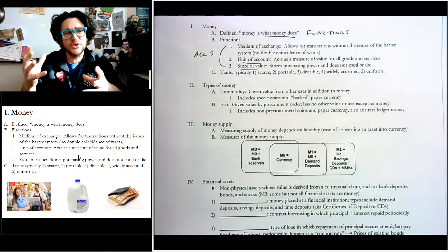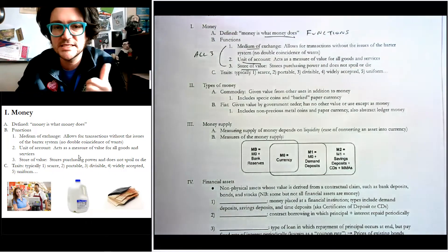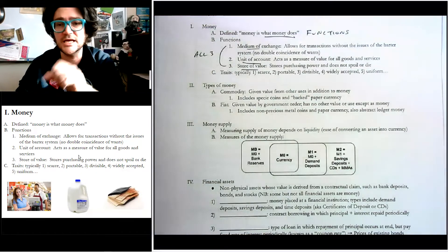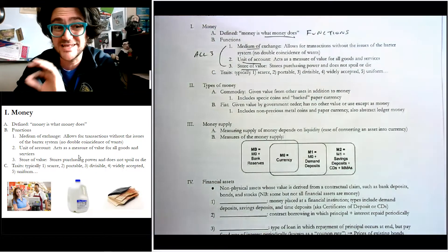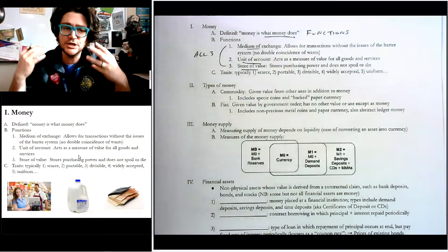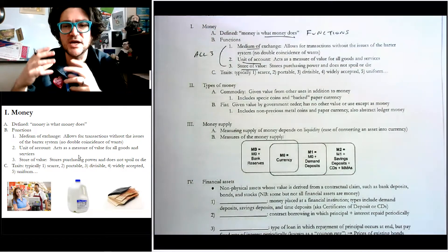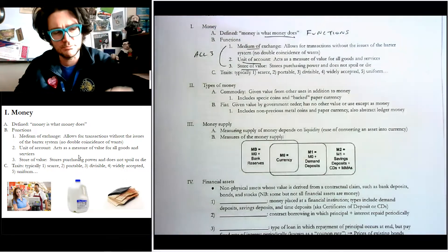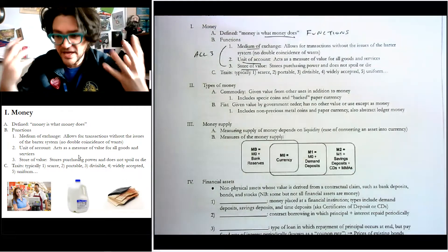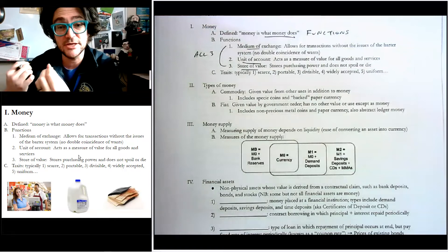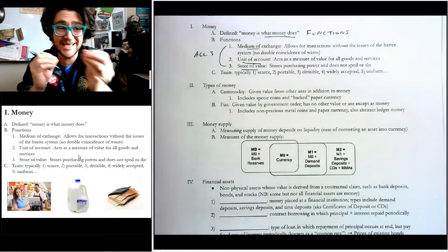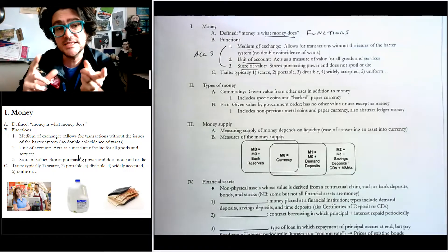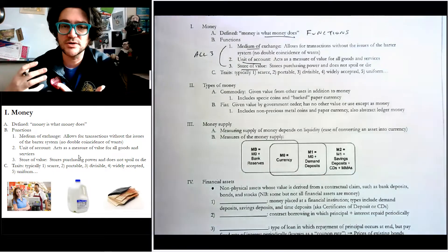Anything can be used as money as long as it does these three things really well. So the first would be like when you go to the grocery store and you buy something — you're going to buy this gallon of milk. That's using money as a medium of exchange. Literally, you're using it to get something else. It's the intermediary between you and the thing you want.